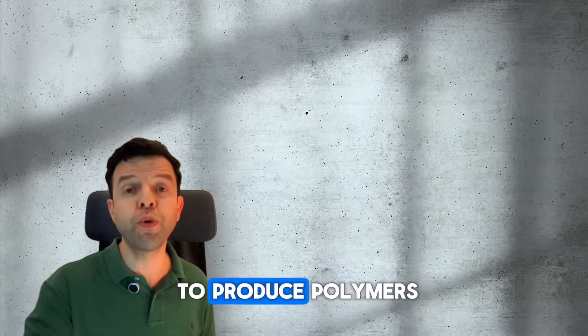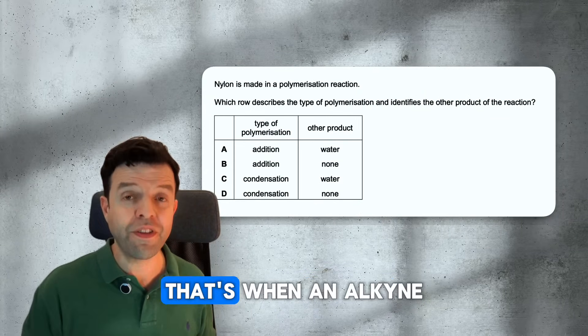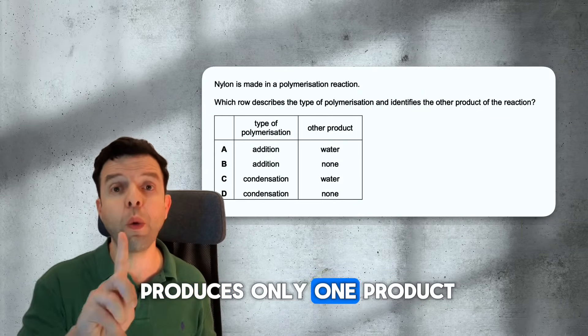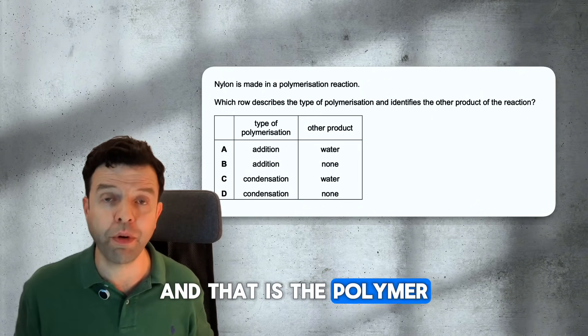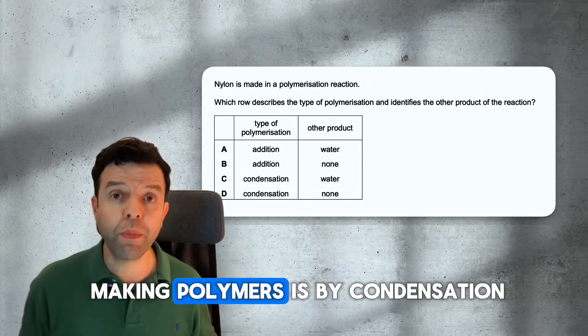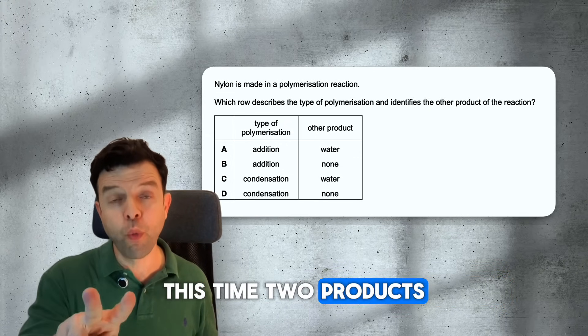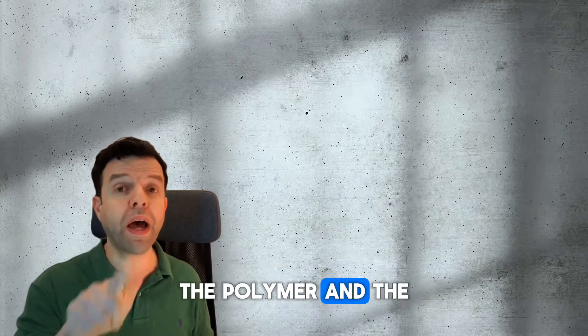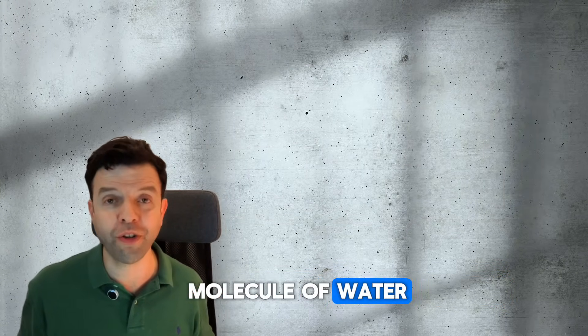There are two ways to produce polymers. First, its addition, that's when an alkene produces only one product and that is the polymer. The second method of making polymers is by condensation. This time, two products are formed: the polymer and the molecule of water.